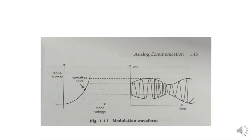This is the modulating waveform. First, we draw a graph between the diode current and the diode voltage. Here we have the operating point, which corresponds to a particular modulated waveform. The message signal and the carrier signal are added to get the modulated waveform as the output.